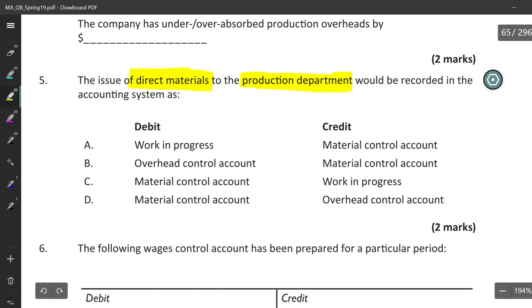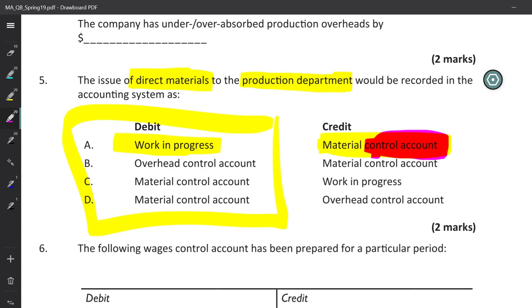Oh, look at this. Direct materials only go there. So I can solve it without even looking at the others. Credit material control account. Don't worry about this idea of control account. We'll do that when we talk about financial accounting at our next encounter.